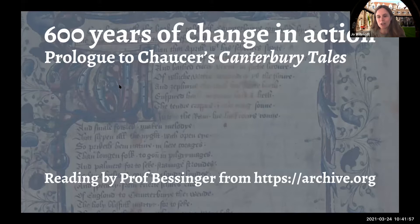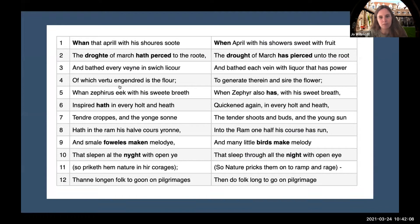Whan that April with his shoures soote, the droghte of March hath perced to the roote, and bathed every veyne in swich licour, of which vertu engendred is the flour. Whan Zephyrus eek with his sweete breeth, inspired hath in every holt and heeth the tendre croppes, and the yonge sonne hath in the Ram his halve cours yronne, and smale foweles maken melodye, that slepen al the nyght with open eye, so priketh hem Nature in hir corages. Thanne longen folk to goon on pilgrimages, and palmeres for to seken straunge strondes.